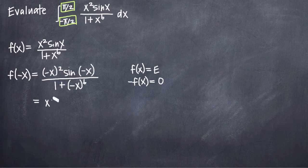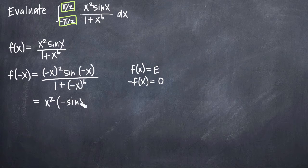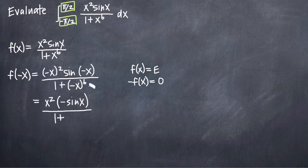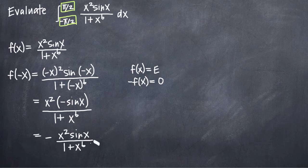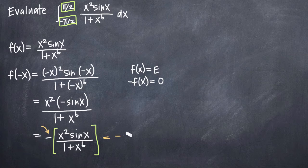In this case, negative x squared gives us positive x squared — that negative sign cancels. Sine of negative x is the same thing as negative sine of x. And in the denominator, negative x raised to the sixth power gives us positive x to the sixth, since a negative base raised to an even exponent is positive. Pulling the negative sign out front, we end up with negative x squared sine x divided by 1 plus x to the sixth — which is exactly negative f of x. That means our function is odd.